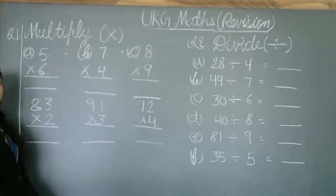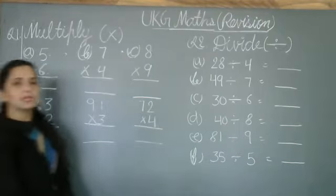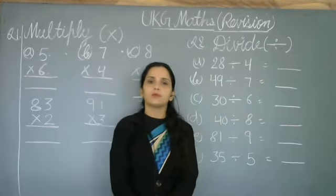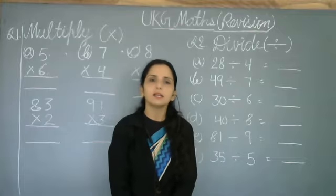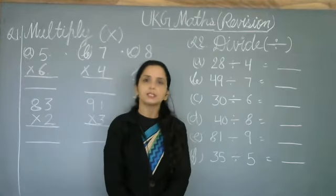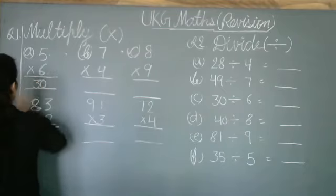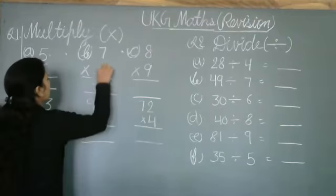Where do we read the 6 table until 5? 6 times 1 is 6, 6 times 2 is 12, 6 times 3 is 18, 6 times 4 is 24, 6 times 5 is 30. So what will we write? 30. We will write our answer.